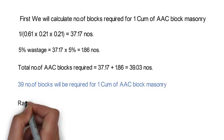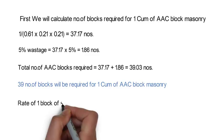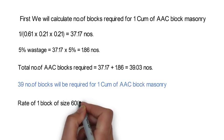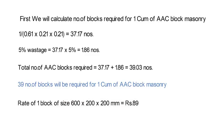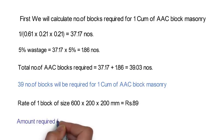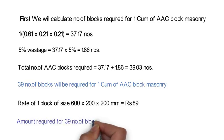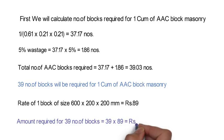The rate of one block of size 600x200x200mm in the market is approximately 89 rupees. This rate will change depending upon the source of supply and site location. So the amount required for 39 blocks shall be 39 x 89 is equal to 3,471 rupees.